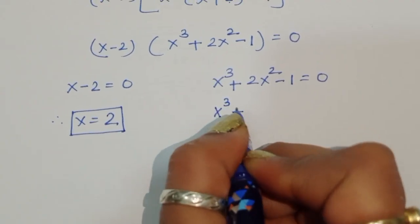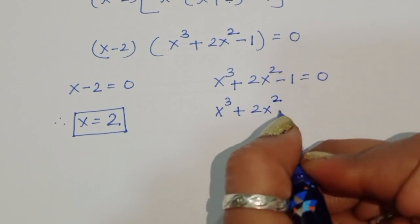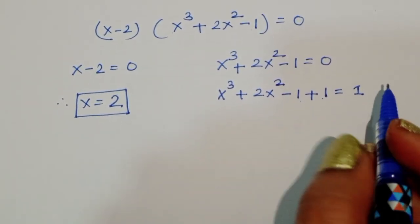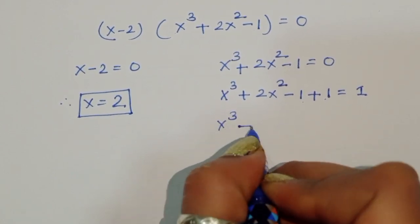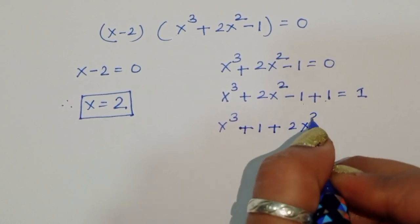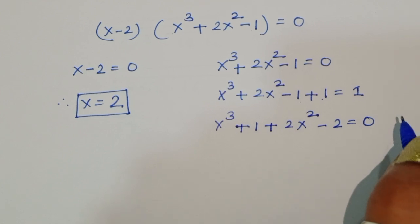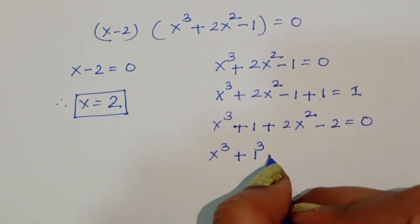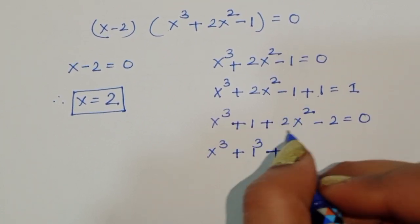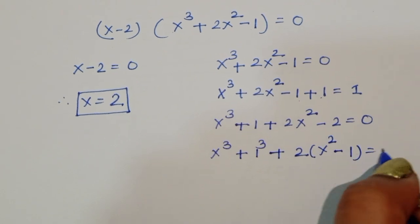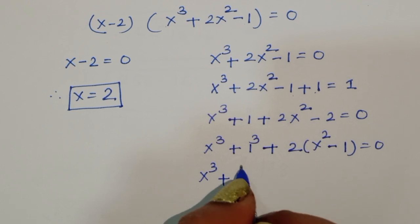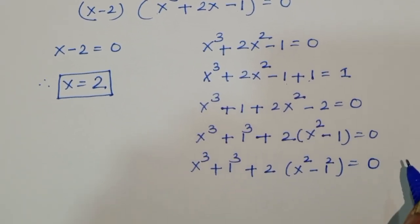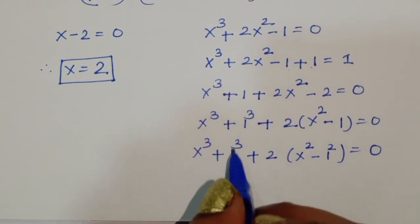Now for the second equation x³ + 2x² - 1 = 0, we add 1 to both sides: x³ + 2x² - 1 + 1 = 1, keeping the LHS and RHS balanced. We rearrange as x³ + 1 + 2x² - 2 = 0, then x³ + 1³ + 2(x² - 1) = 0.